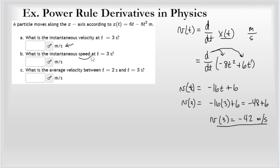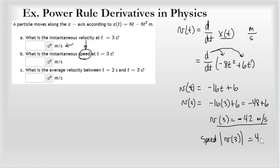For instantaneous speed, recall that in physics there's a difference between velocity and speed. Velocity has direction — we can see this result is in the negative direction. Speed has no direction, so the speed is the absolute value of the velocity at 3 seconds, which is simply 42 meters per second.